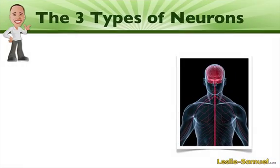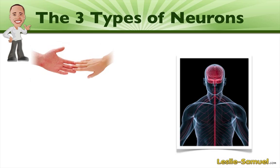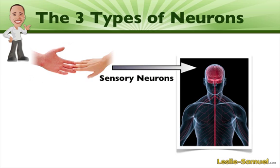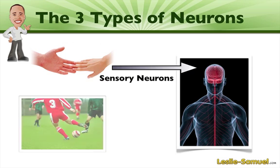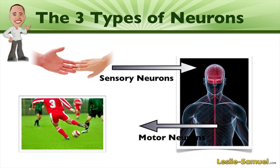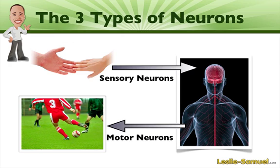To illustrate this, let's imagine you're being touched by someone, or as in the first example, you touch a hot stove. Signals are going to be sent to the central nervous system and this happens via sensory neurons. Then let's imagine you're out on the field playing a game of football and you're getting ready to kick a ball. Well, the central nervous system is sending signals to the muscles in your legs via motor neurons, telling those muscles to contract in a certain way so that you can kick the ball.